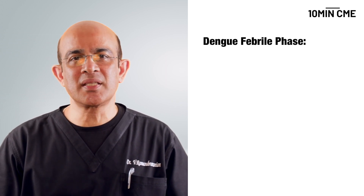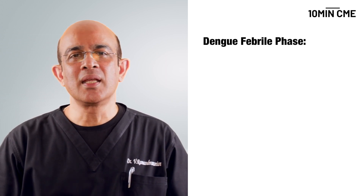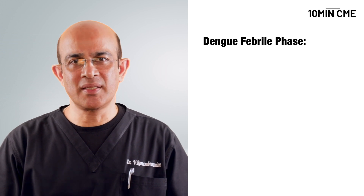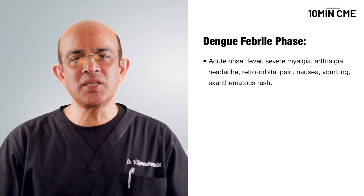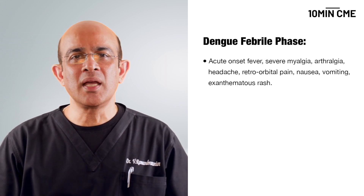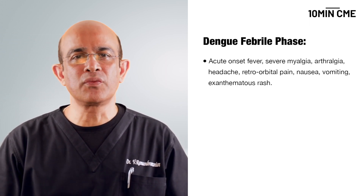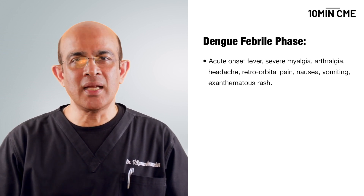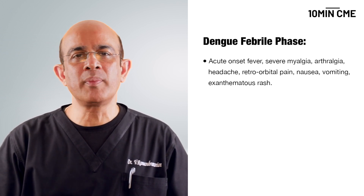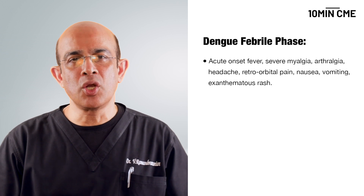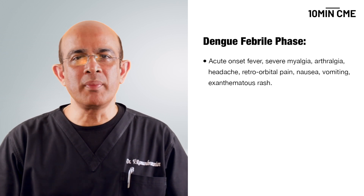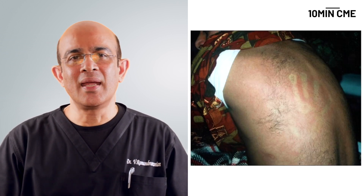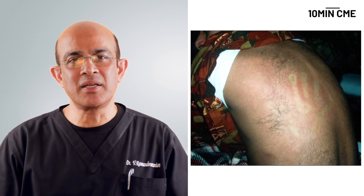The disease presents abruptly in three identifiable phases. The initial presentation can be acute onset of fever with severe myalgia, arthralgia, headache, retroorbital pain, nausea, vomiting, and sometimes an exanthematous rash.